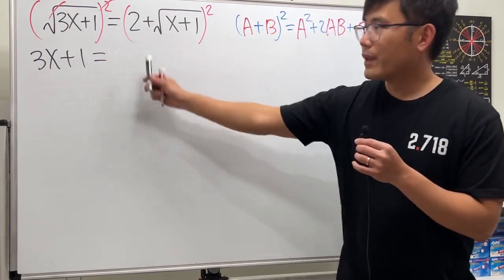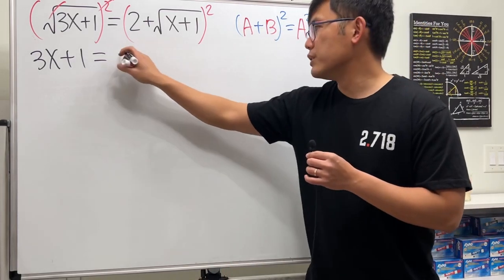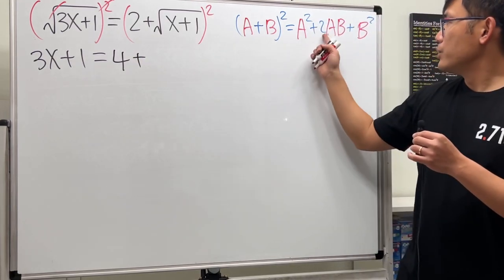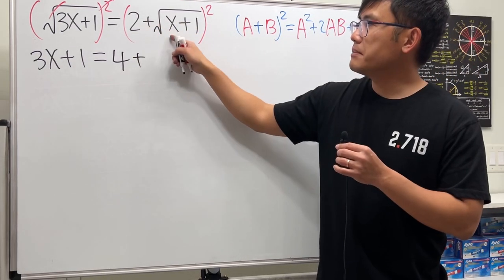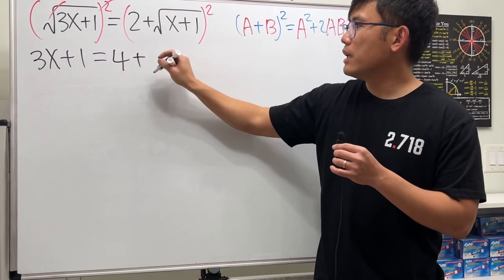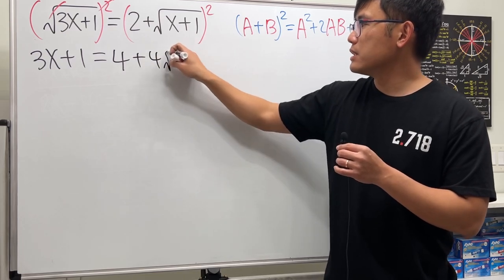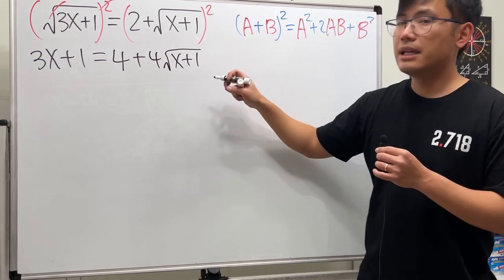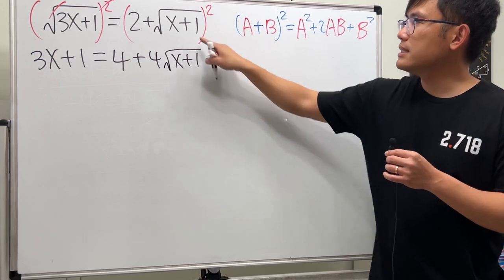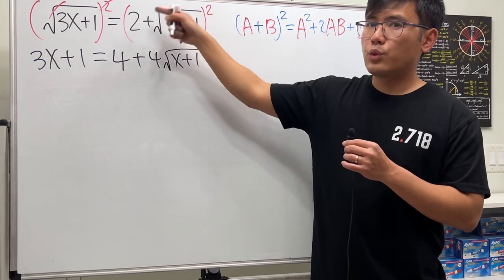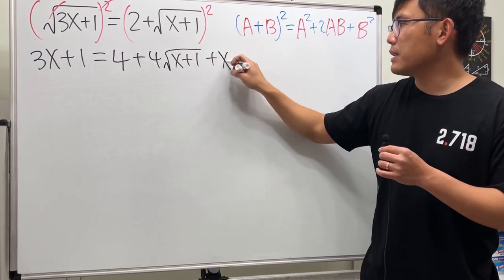Alright, so we take 2 and we square that, which is 4. And then we add 2 times this and that. So 2 times 2 is 4, and also this square root. And we have x plus 1 inside. And then the last turn here is plus this square, but square and square root cancel, so we just have x plus 1.